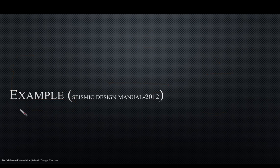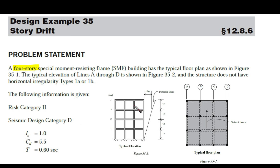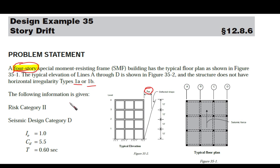Now let's apply what we've learned with an example from the 2012 Seismic Design Manual. We have a four-story special moment-resisting frame (SMRF). The building has a typical floor plan with no irregularities. Given data: risk category 2, seismic design category D, importance factor IE = 1.0, deflection amplification factor CD = 5.5, and fundamental period T = 0.6 seconds.